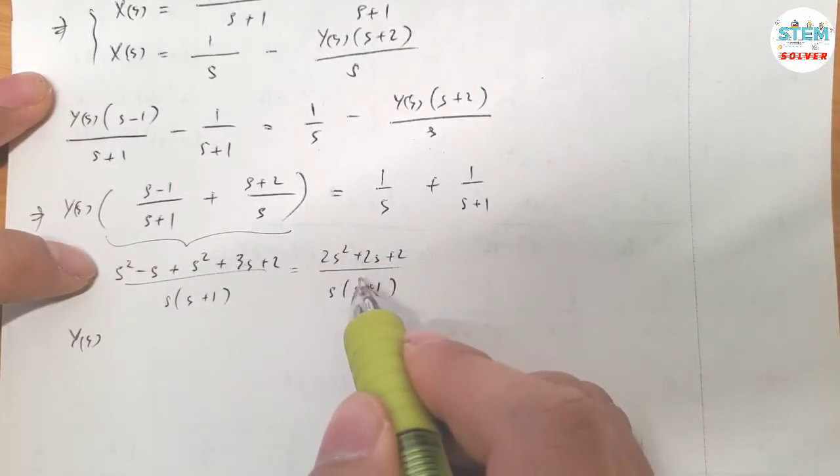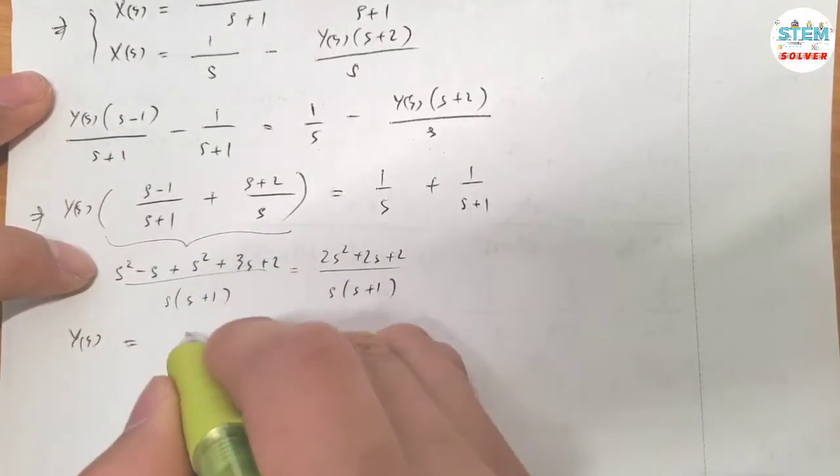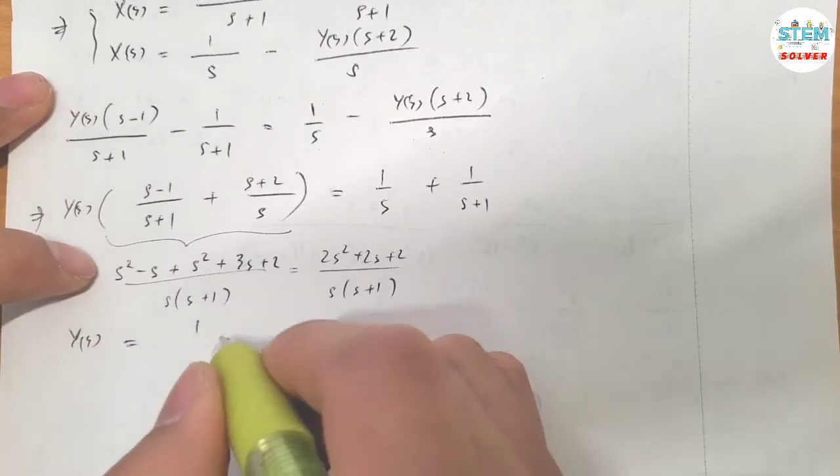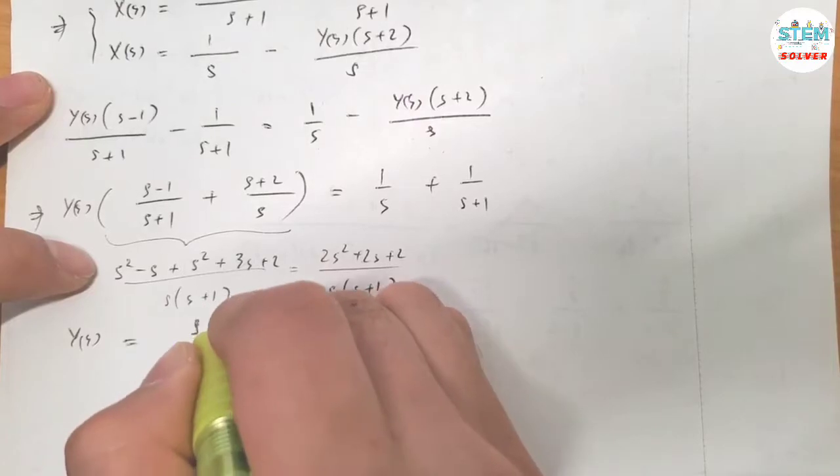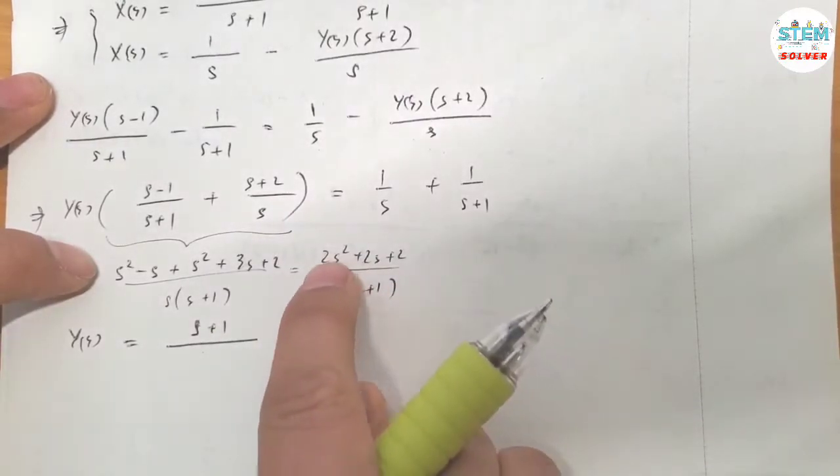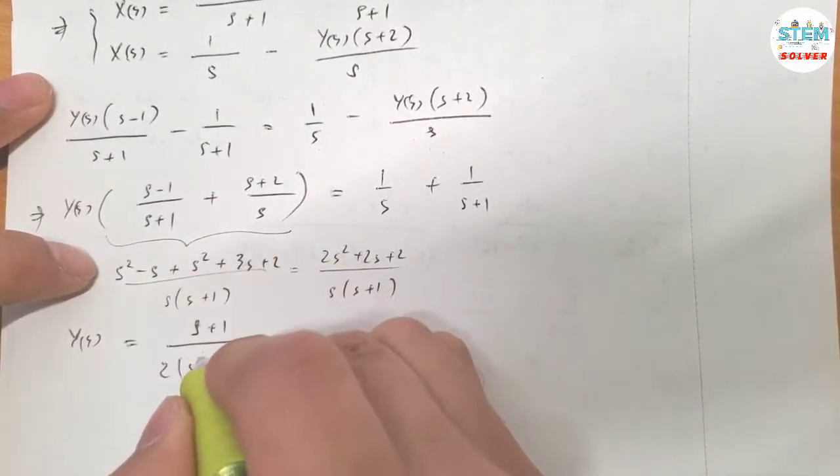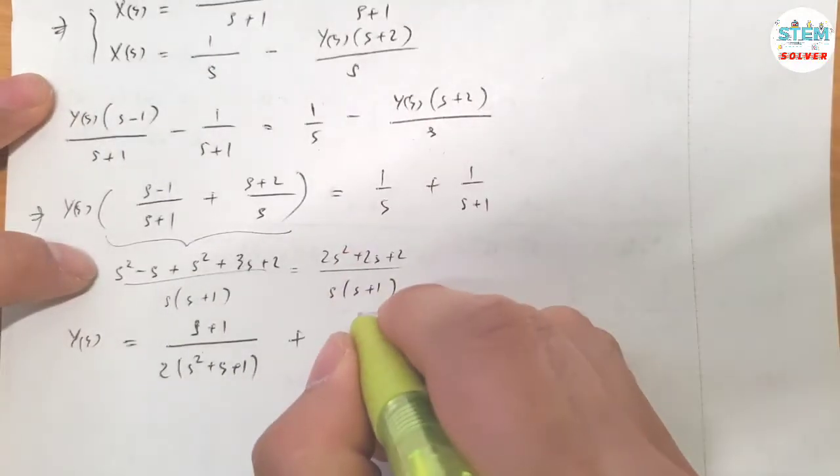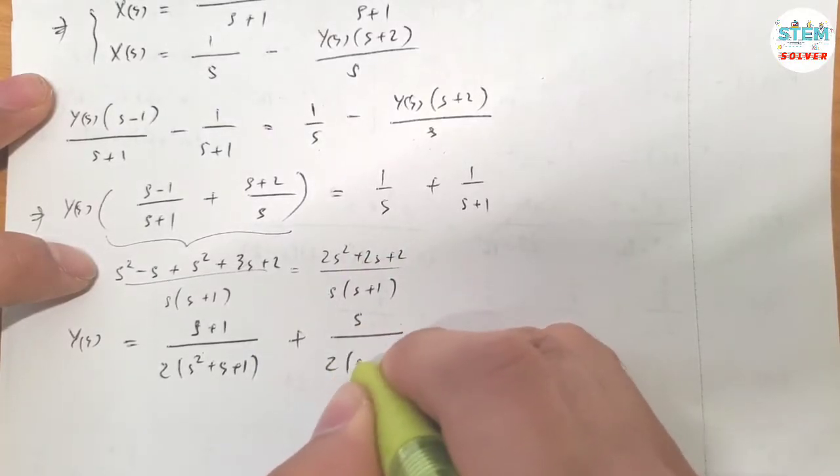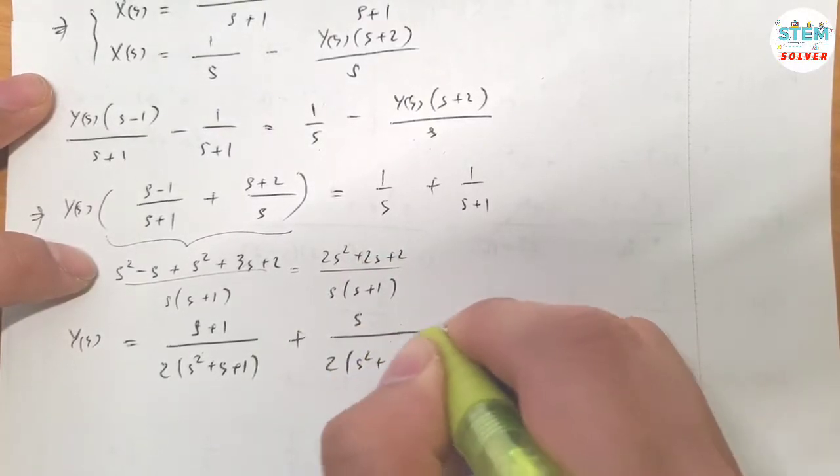So divide both sides by this. I have (S plus 1) over, I'm going to factor out a 2. And S over (2S² plus S plus 1).